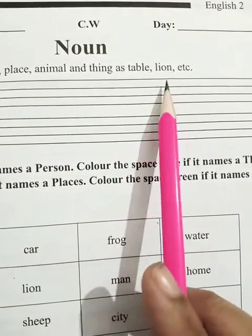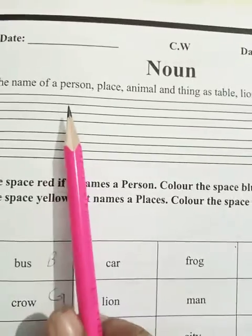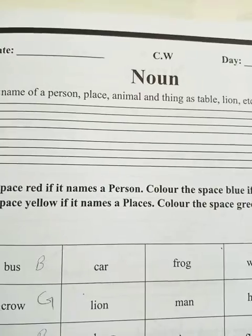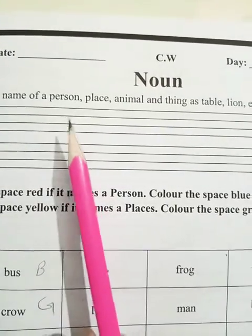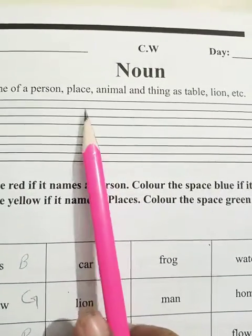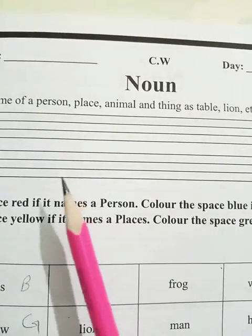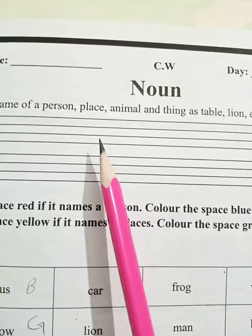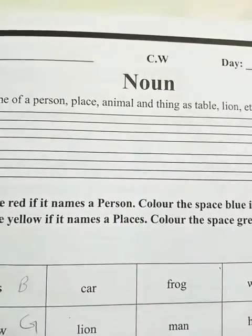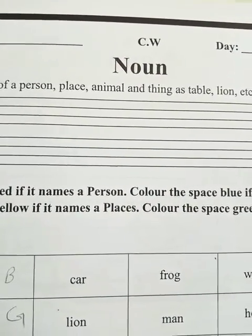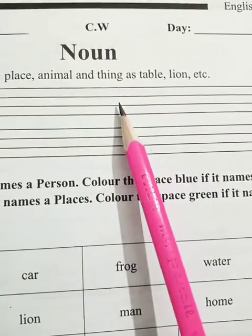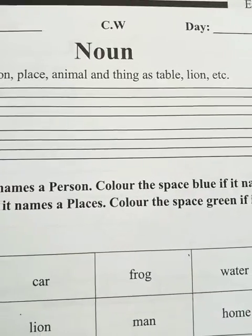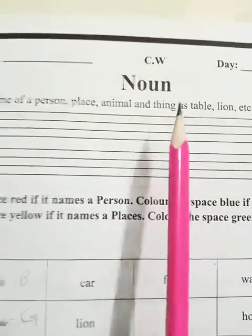Any name of a person — like Ali, Sara, farmer, doctor, teacher. Any place name — Karachi, London, Lahore, Islamabad, Europe, Asia, Earth, Moon. Any animal — lion, rabbit, dog, elephant, giraffe. And any thing — like book, eraser, pencil — anything. So these all are nouns. You have to write this definition here.